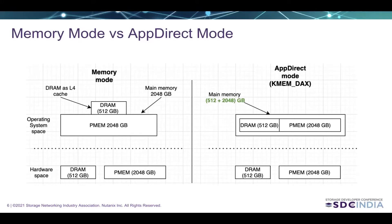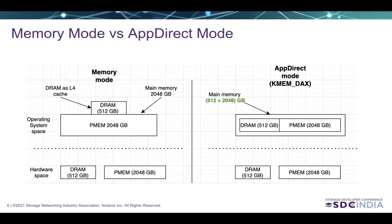Let's talk about the first option, memory mode, and how it differs from AppDirect mode. Memory mode is a BIOS-level setting and is completely transparent to the operating system or applications. For example, if we have a system with 512 GB DRAM and 2048 GB persistent memory configured in memory mode, the DRAM will act as an L4 cache. The main memory capacity will be equivalent to the persistent memory capacity, 2048 GB. So we are effectively losing DRAM capacity from the system memory size. Additionally, the programmer has no control over where in-memory data is placed — it can be in DRAM or persistent memory — so performance will be unpredictable.